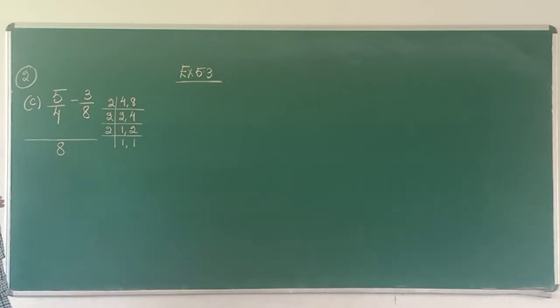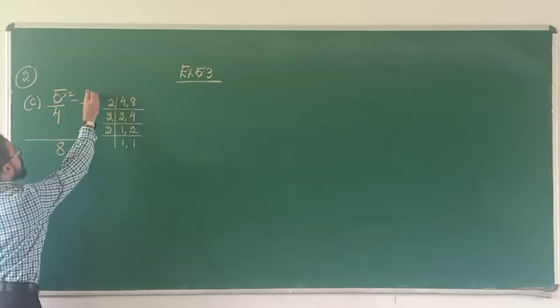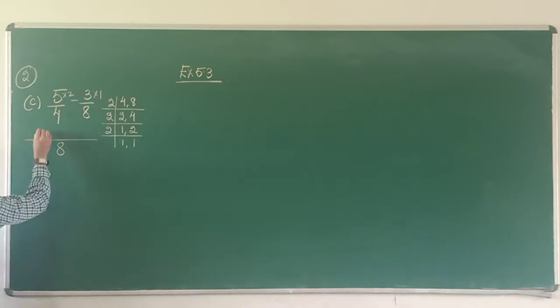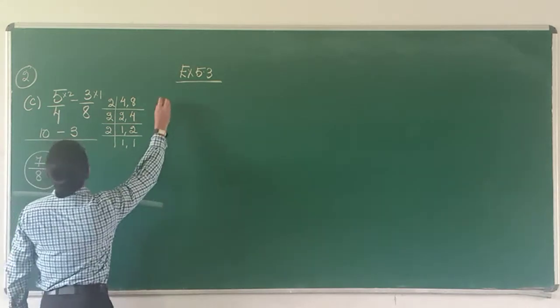The method is exactly the same for addition and subtraction. 4 goes into 8 two times, so 5 has to be multiplied by 2. 8 goes into 8 one time, so 3 has to be multiplied by 1. 5 2's are 10 minus 3 1's are 3. And 10 minus 3 is 7 upon 8. It's a proper fraction that cannot be reduced to lowest term because 7 is a prime number. So that's sum number 2C.